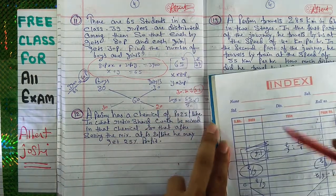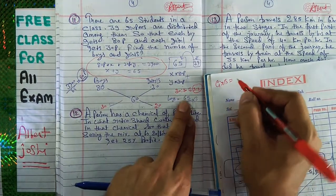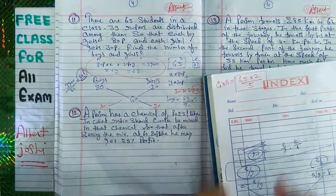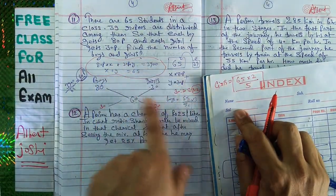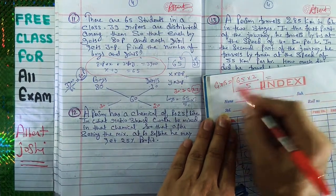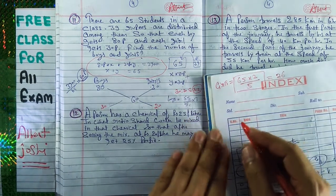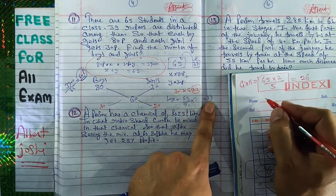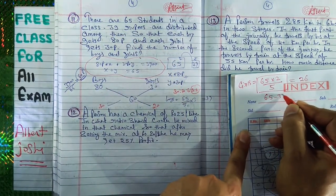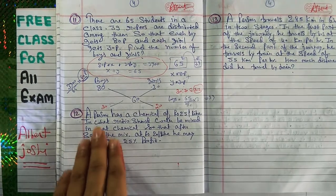Similarly, the number of girls equals 65 multiplied by 2 upon 5, which is 26. You can also find it as 65 minus 39 equals 26. So there are two ways to solve this type of problem. I think you understand. Now we move to the second question.